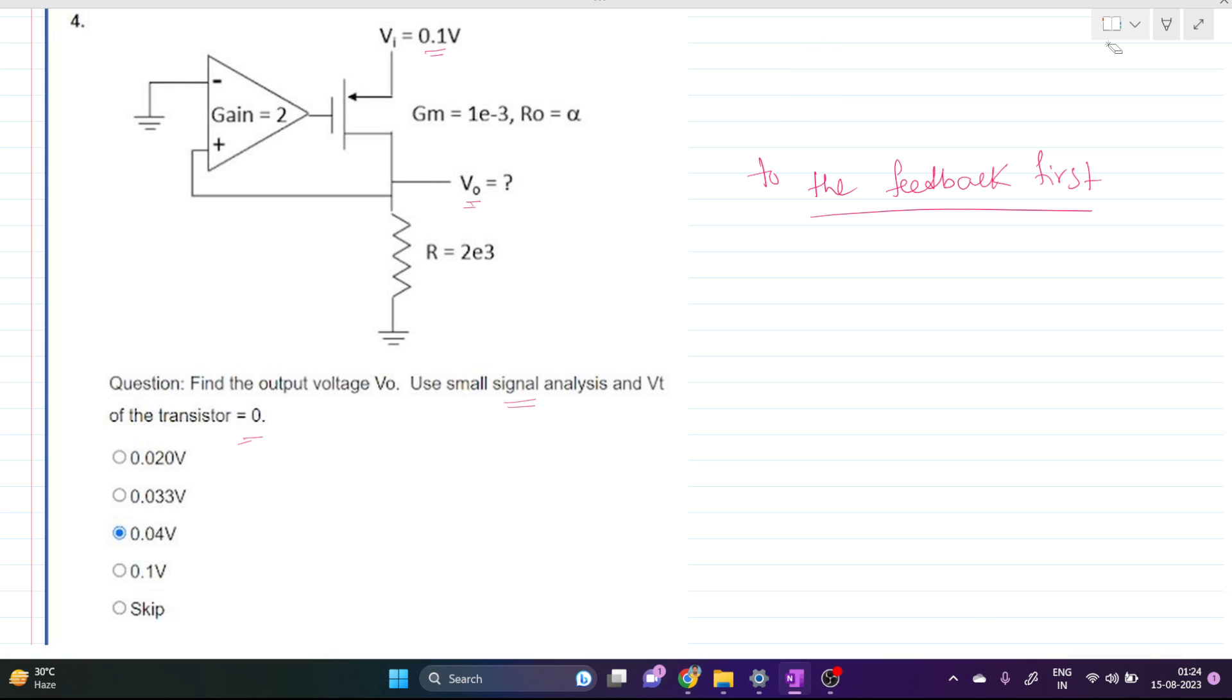Let's say here we can cut this loop. Let's say this is a del V change. This is nothing but a common source configuration of PMOS. If this is del V plus, so this will be negative. This will be negative, and this negative del V is coming here.